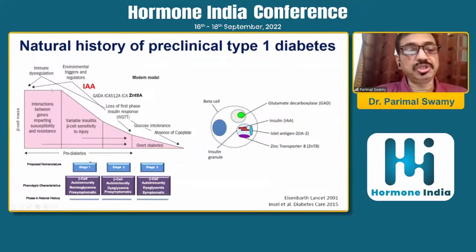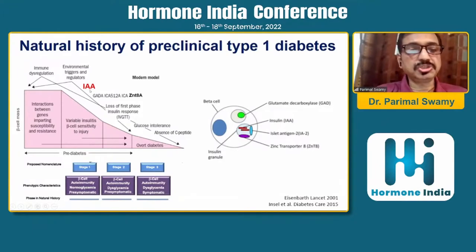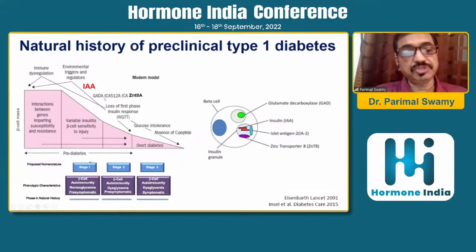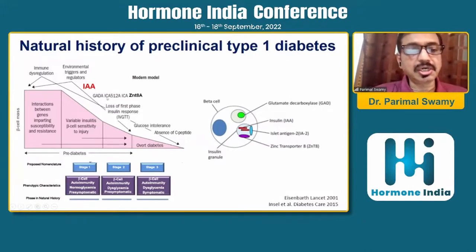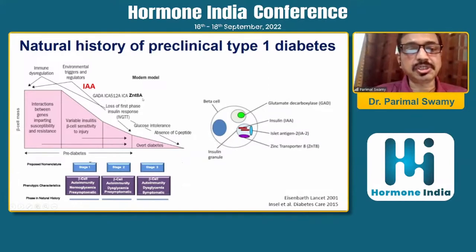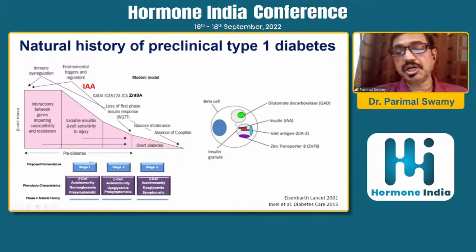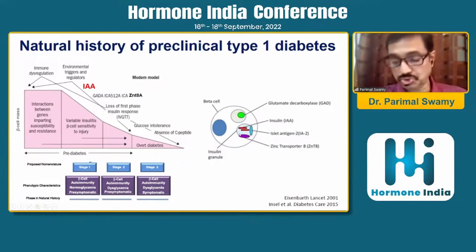With the onset of autoimmunity and insulinitis of the beta cell, the first antibody to appear is the insulin autoantibody, IAA. Then other antibodies appear: GADA, ICS512/IA2A, ICA, and ZnT8A antibodies. The second diagram shows the location of all those pancreatic antigens against which these antibodies are produced.